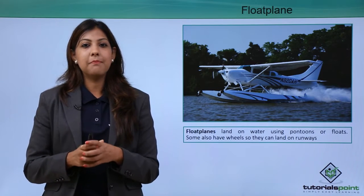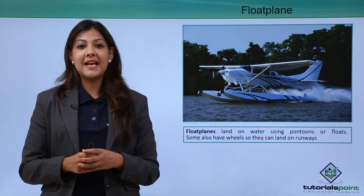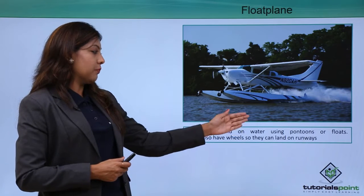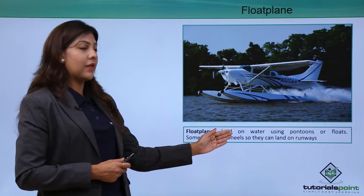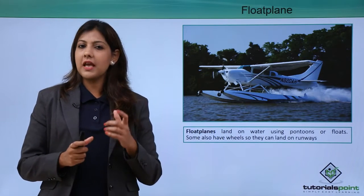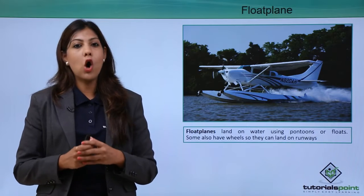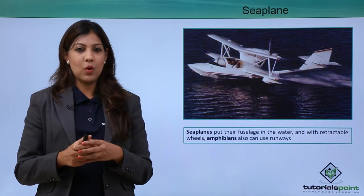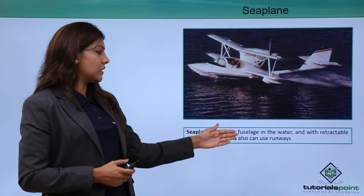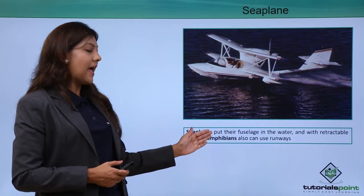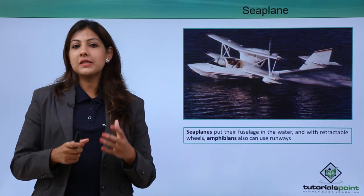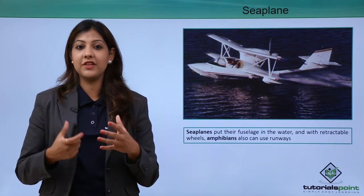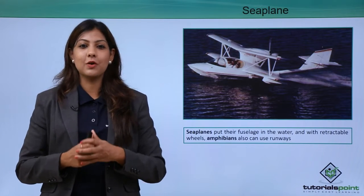A float plane, also known as a sea plane, can land on water using pontoons or floats. Some also have wheels so they can land on runways, giving them a dual purpose. Sea planes similarly put the fuselage in the water, and with retractable wheels amphibians can also use runways. So float planes and sea planes share the similar quality of landing on water as well as on land.